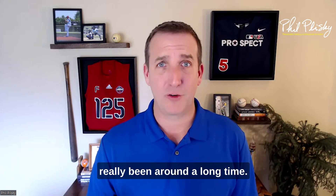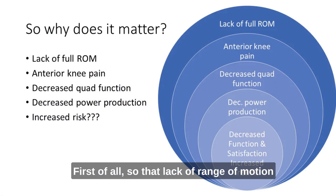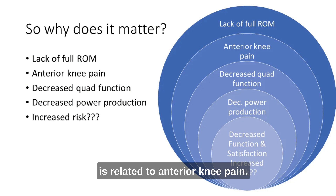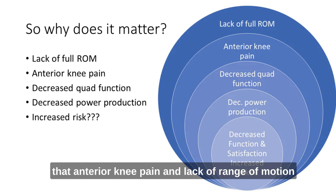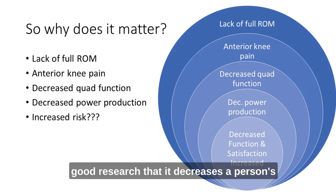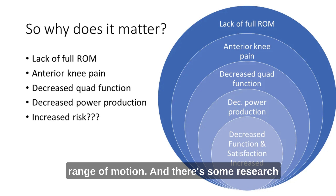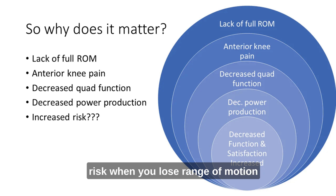Let's go through the research and a little bit of the history. This has been a concept that's been around a long time. Why does it matter? First of all, lack of range of motion is related to anterior knee pain. The research is pretty clear that anterior knee pain and lack of range of motion are related to decreased quad function. Quad function is clearly related to power production. And there's some good research showing it decreases a person's functional perception and their satisfaction with their surgery. There's also research pointing to increased risk when you lose range of motion in both flexion and extension.